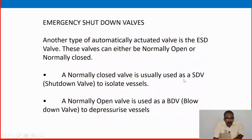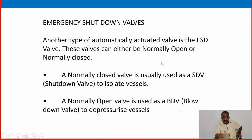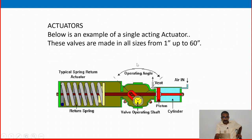Emergency shutdown valves are another type of automatically actuated valve — ESD valve. These valves can be either normally open or normally closed. A normally closed valve is usually used as SDV — shut down valve — and the other one is a BDV — blow down valve. Below is an example of a single acting actuator. These valves are made in full sizes from one inch to 60 inches.